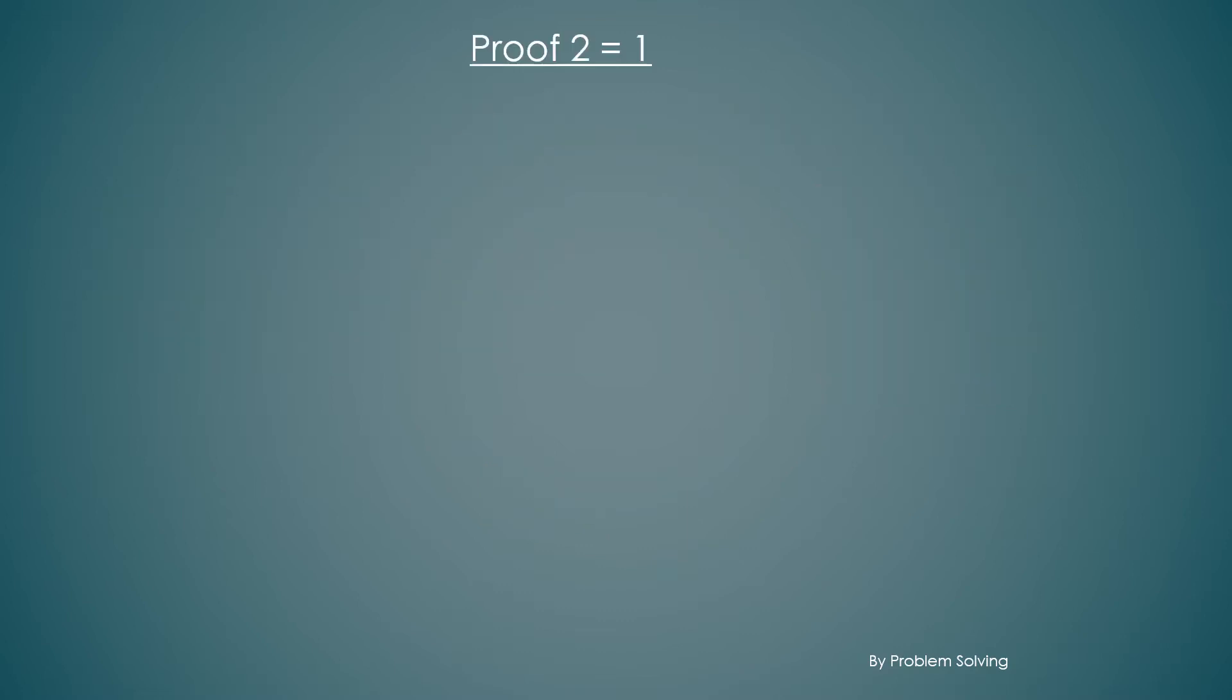Proof that 2 is equal to 1. Suppose a equal to b. Multiply both sides with a and we get a times a equal to a times b. We can say this is a squared equal to ab.